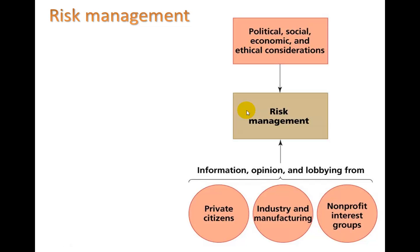Once we know the risk level, we can begin to manage it. Risk management takes into account information from private citizens, industry, nonprofit, and interest groups. We're really doing cost-benefit analysis here — will we accept some cost of risk in exchange for benefits? For example, maybe there's a chemical that works very well at preventing things from burning, yet we know it's toxic, but it will still be used in some building materials.